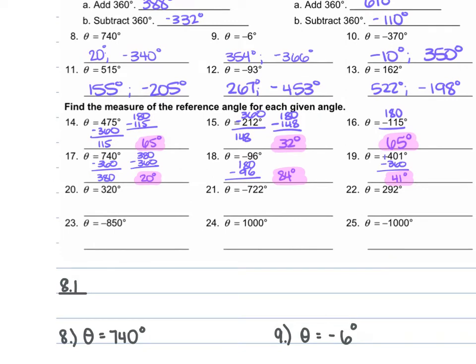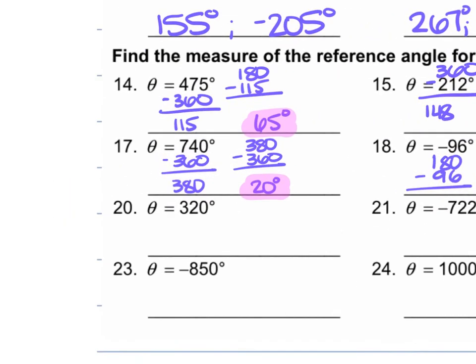For number 20, theta is 320 degrees. We're just going to do 360 minus 320, which gives us 40 degrees.